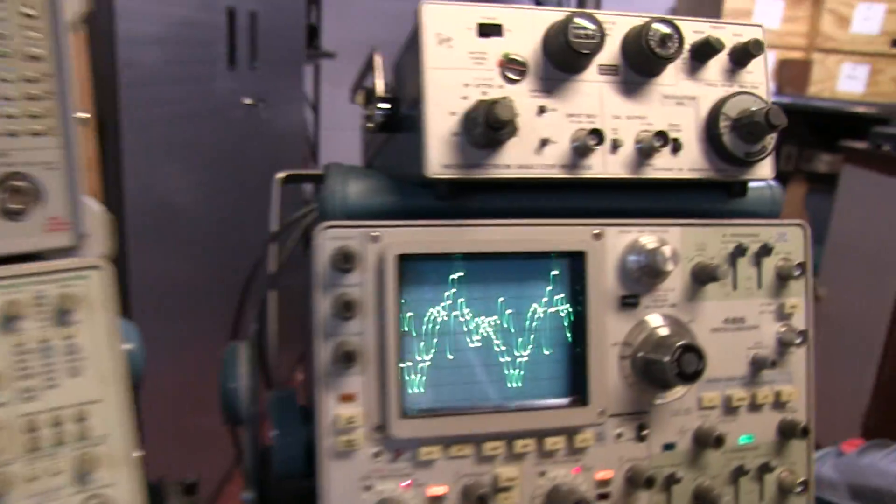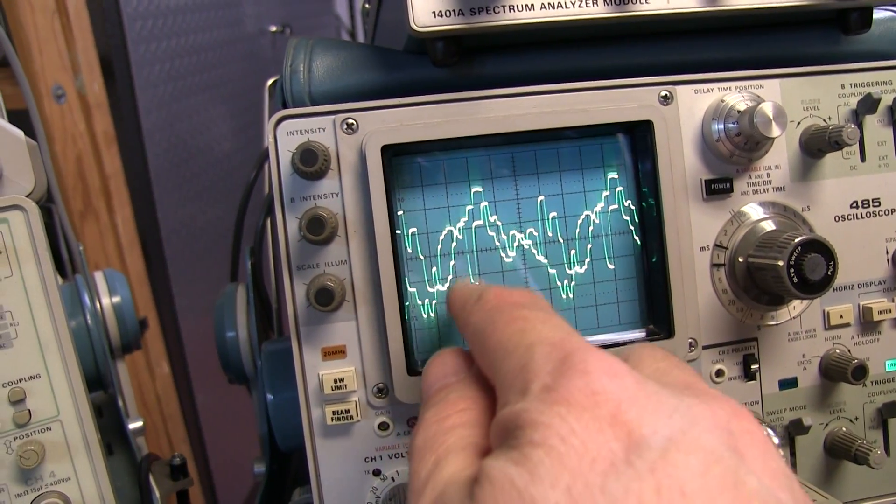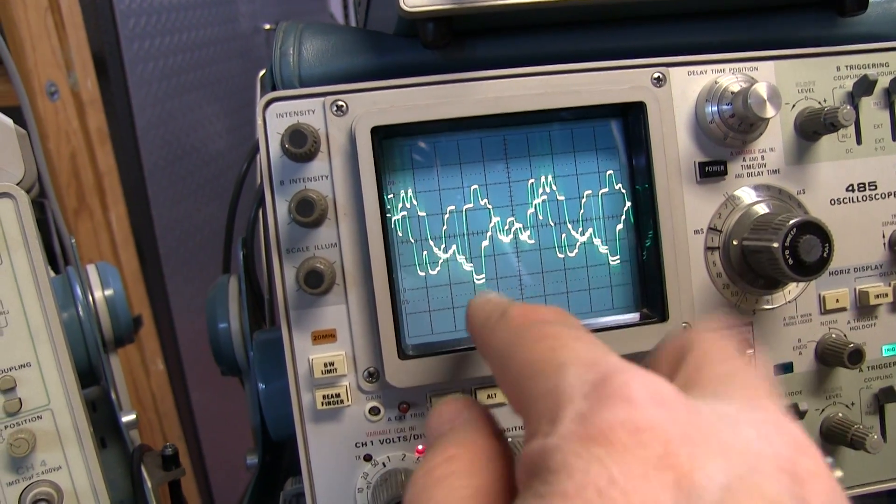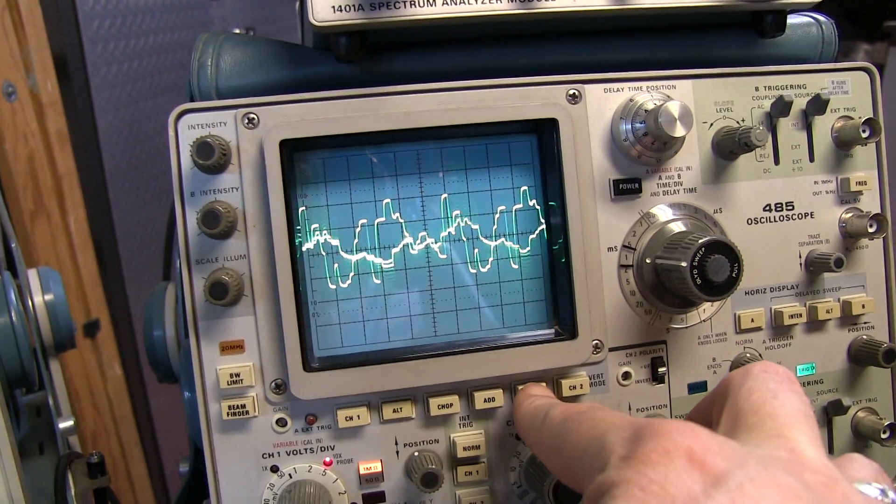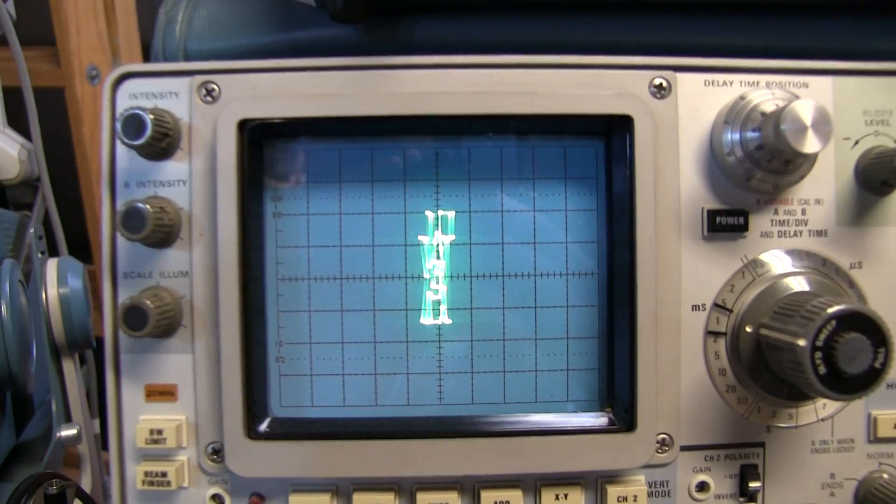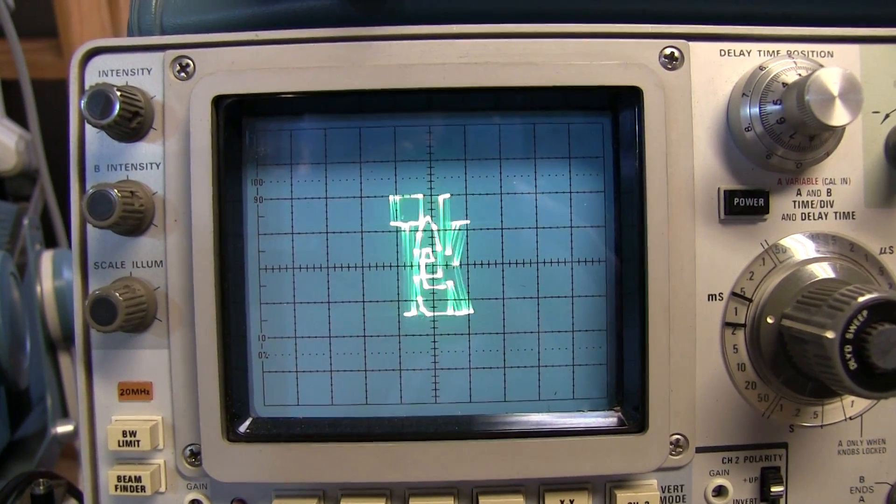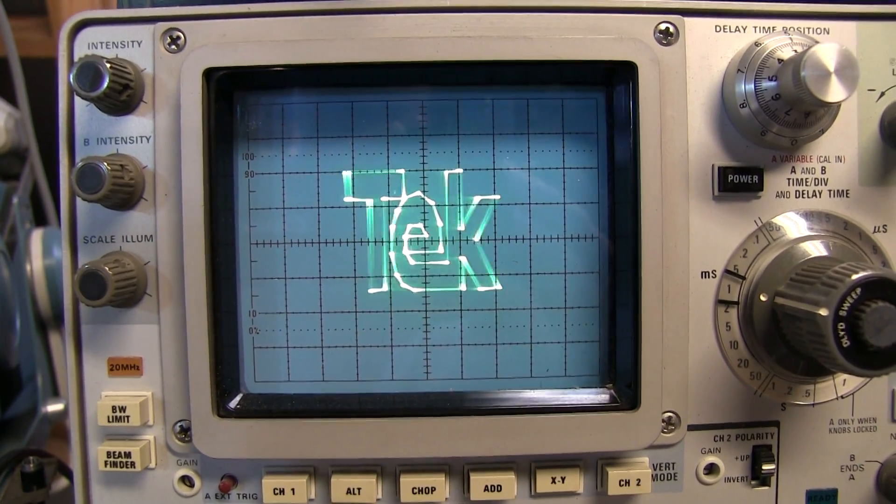I can see the Y waveform kind of stationary and the X waveform kind of rotating back and forth. And we put this into XY mode and we get our spinning logo. And that was the whole process of how this little spinning tech logo project came together.